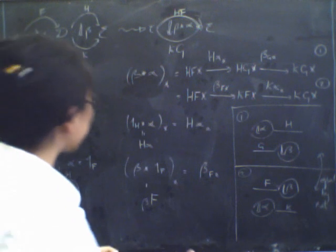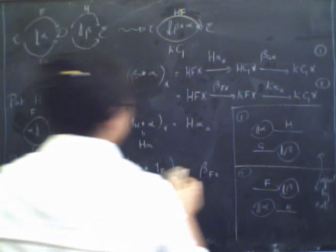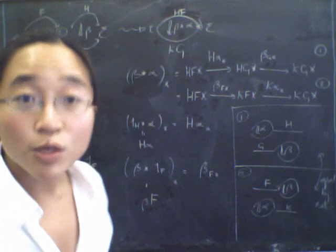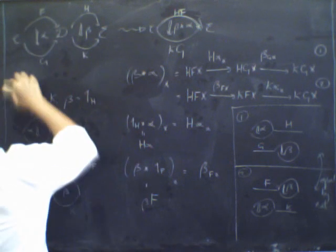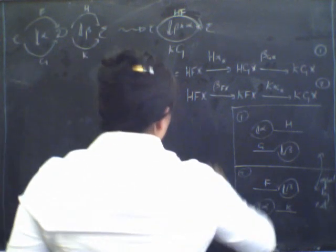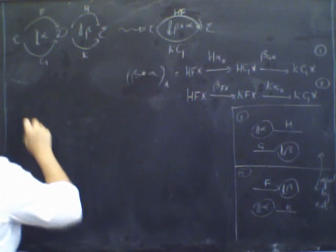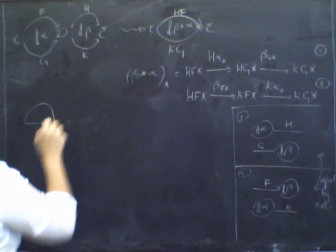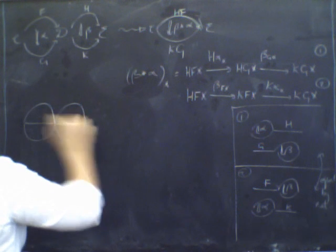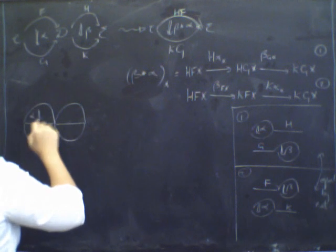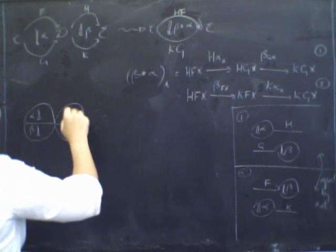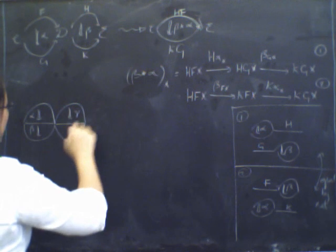Now it should become completely obvious that the middle four interchange law is going to hold — though of course it's not going to be obvious when I haven't told you what it's supposed to be. So let me now tell you what the Middle Four Interchange Law says. It says that supposing you've got four — that's why it's 'middle four' — four natural transformations, in this configuration: alpha, beta, gamma, delta.